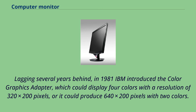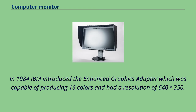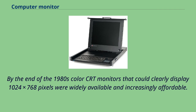Lagging several years behind, in 1981 IBM introduced the color graphics adapter, which could display four colors with a resolution of 320×200 pixels, or it could produce 640×200 pixels with two colors. In 1984 IBM introduced the enhanced graphics adapter which was capable of producing 16 colors and had a resolution of 640×350. By the end of the 1980s, color CRT monitors that could clearly display 1024×768 pixels were widely available and increasingly affordable.